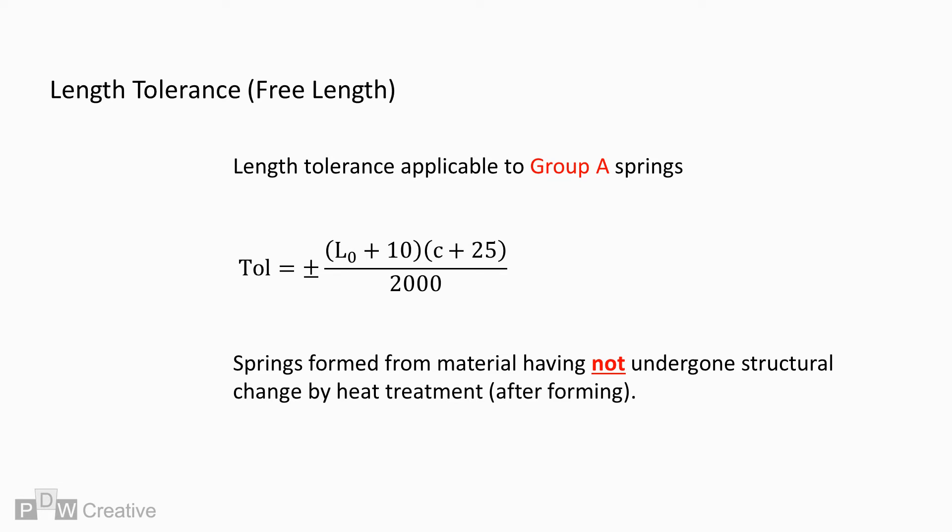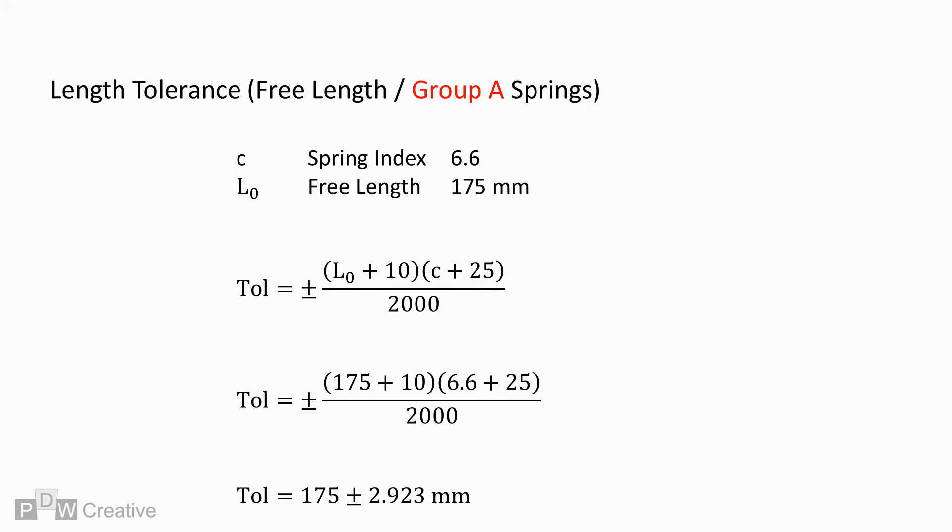The free length is also subject to tolerance. Group type is applicable to free length tolerancing, however, grades 1 and 2 are not. The calculation is dependent on knowing the free length and spring index. For this example, an index of 6.6 and length of 175 mm gives a length tolerance of 2.923 mm.